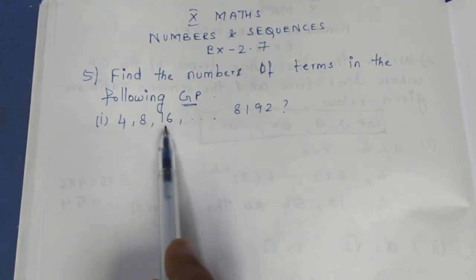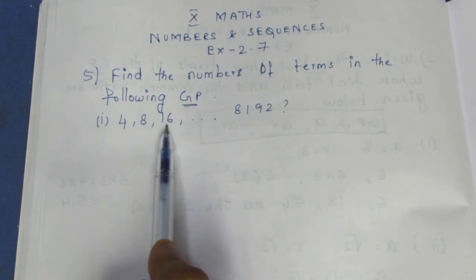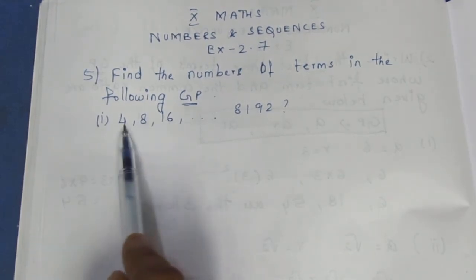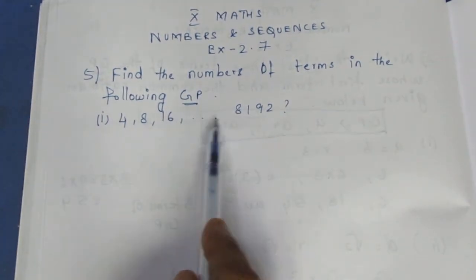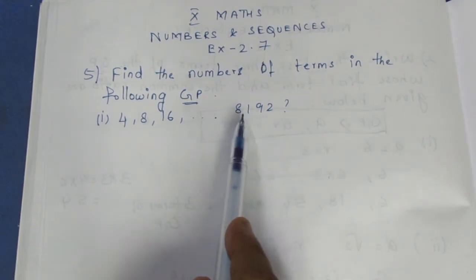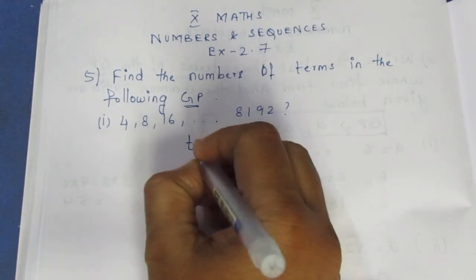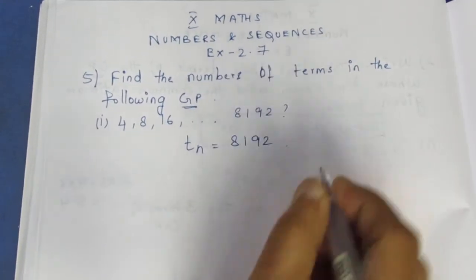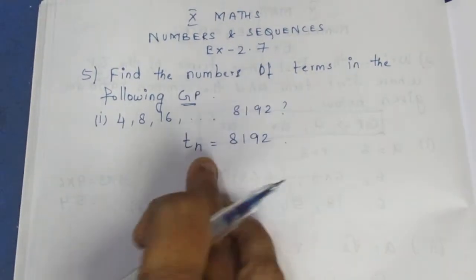For example, we need to find the number of terms. The number of terms is 1, 2, 3 — so the third term is the last term. The total number of terms is what we want. We know the last term Tn, so Tn is equal to the last term. To find the number of terms, we use the total number of terms formula.